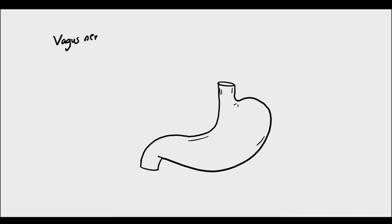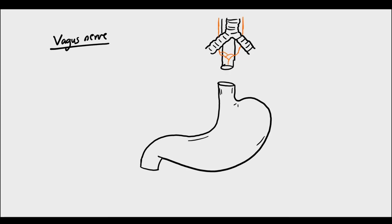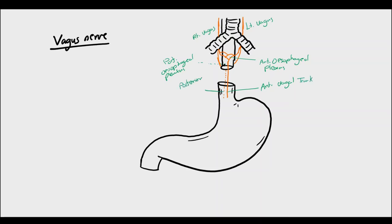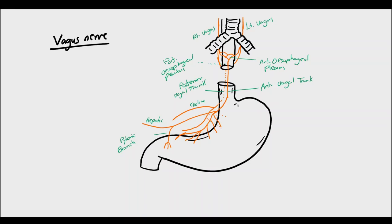The vagus nerve is the tenth and the longest cranial nerve. It is named after the Latin word vagus, which literally means wandering, because it controls a broad range of target tissues. The left and right vagus nerves take course along the right and left side of the oesophagus. They both contribute fibers to the posterior and anterior oesophageal plexus. From the anterior oesophageal plexus arises the anterior vagal trunk, and from the posterior oesophageal plexus arises the posterior vagal trunk. They both enter the abdomen alongside the oesophagus through the oesophageal hiatus of the diaphragm. The posterior vagal trunk gives off the celiac nerve to the celiac plexus, while the anterior vagal trunk gives off the hepatic branch to the hepatic plexus and a pyloric branch. Both vagal trunks give gastric branches along the lesser curvature of the stomach, also known as the nerve of Latarjet, which ends with the crow's foot.